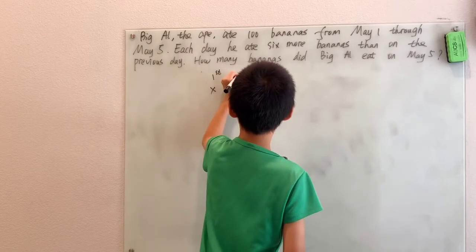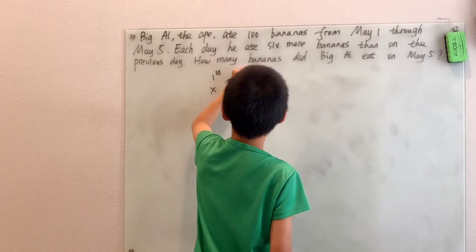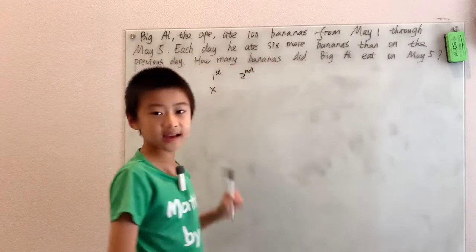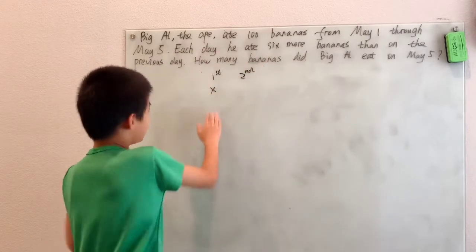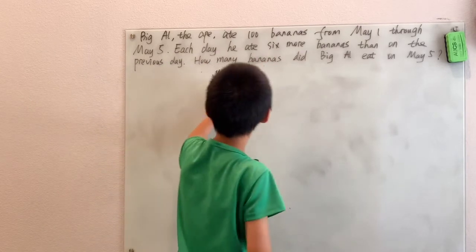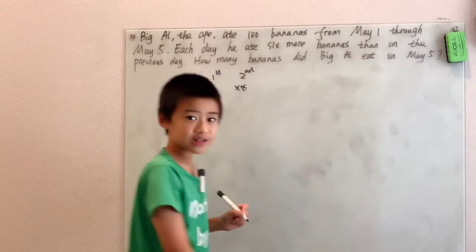Well, that means on the second day, he eats 6 more bananas than on the previous day. So, if he ate X bananas on the previous day, then there's X plus 6 bananas.